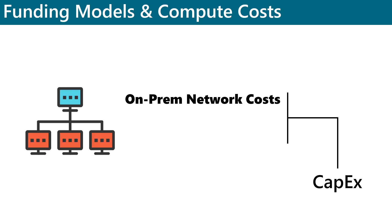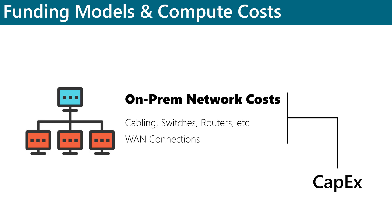Network costs, as you would expect, include networking hardware like cables, switches, routers, and that type of stuff. WAN connections and internet connections also fall under networking costs. These network hardware expenses also fall into the CAPEX budget, just like the storage hardware and the server hardware costs.